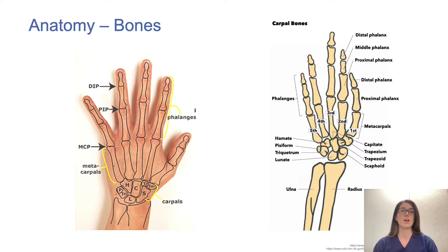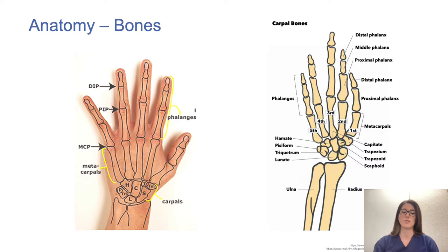These are the bones of the hand. They're made up of eight carpal bones, the metacarpals, and the phalanges. For each finger, except for the thumb, there is a proximal, middle, and distal phalange. The thumb just has a proximal and distal phalange.